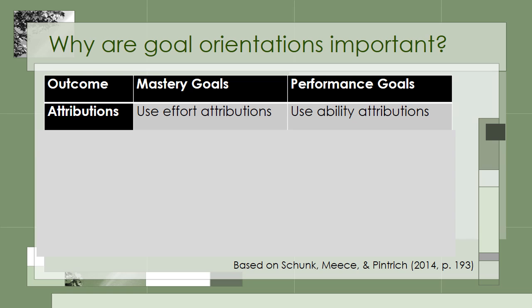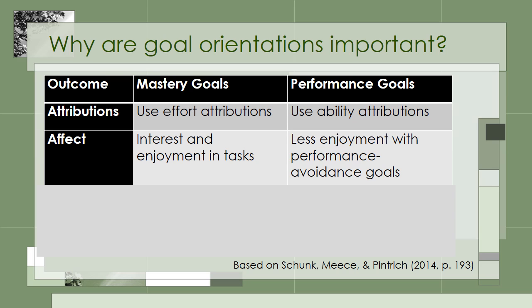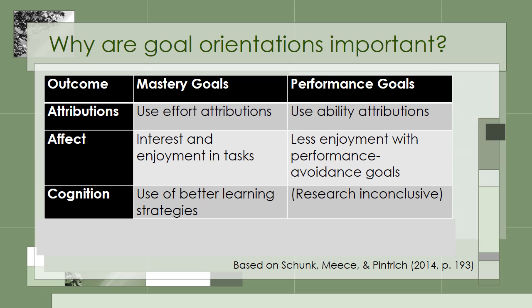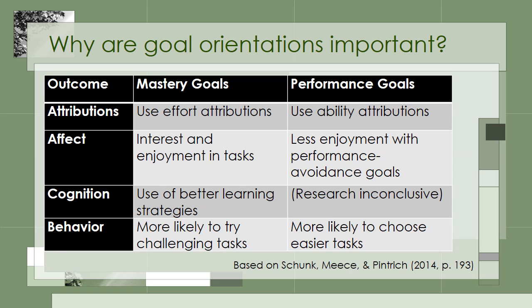When someone fails and attributes it to a lack of stable ability, they tend to feel helpless and unmotivated. In terms of affect, students with mastery goals tend to be more interested in and enjoy tasks more than students with performance avoidance goals. For cognition, students with mastery goals tend to use more effective learning strategies, although the research is inconclusive for performance goals — sometimes students with performance approach goals actually outperform students with mastery goals. With respect to behavior, students with mastery goals are more likely to try challenging tasks, while students with performance goals are more likely to choose easier tasks. Students with mastery goals want challenges so that they can develop their competence.